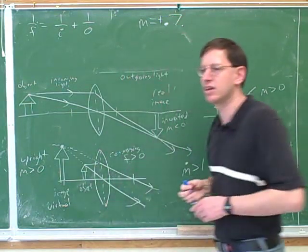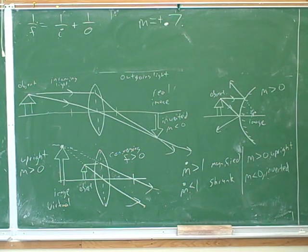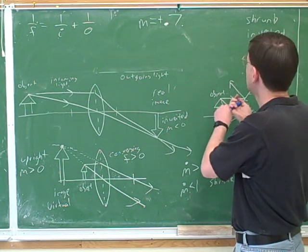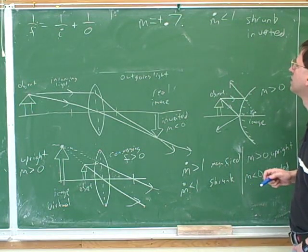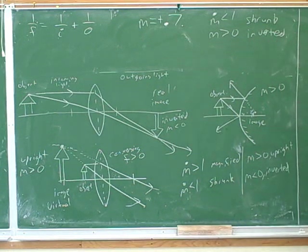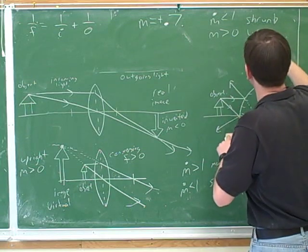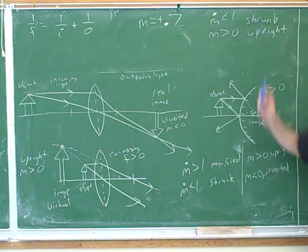Let's say m is positive 0.7. What are the two pieces of information encoded in that m? It's shrunken and it's upright. The magnitude is less than one, so it's shrunk. And because the sign is positive — m is greater than zero — it's upright. So the correct answer is positive m means upright, and magnitude less than one means shrunk.